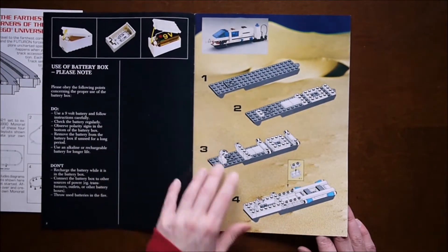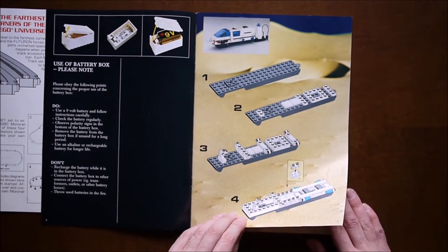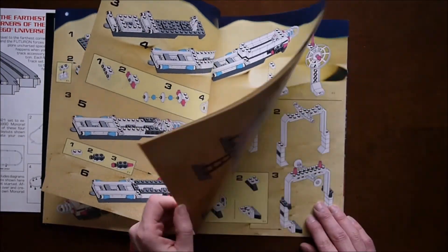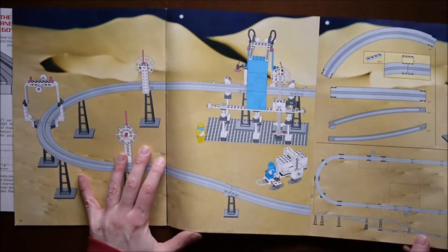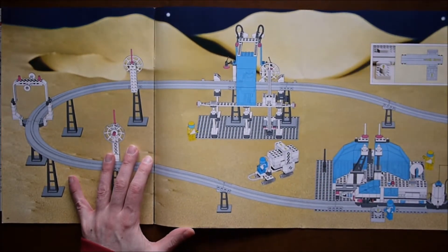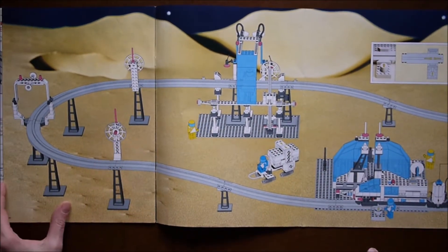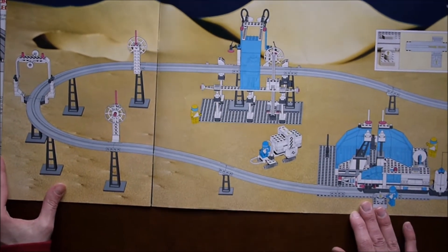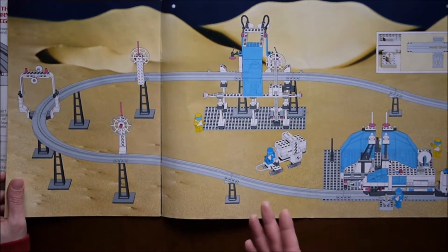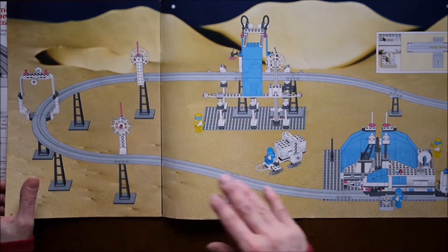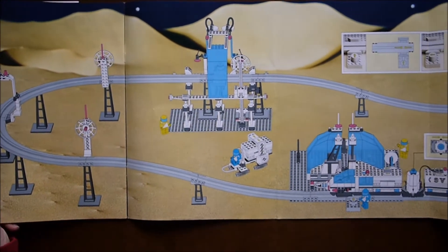And it talks about the nine-volt battery that powers the monorail. I'm just going to flip through here to the foldout page. It's too big to fit in frame. I'll just kind of pan along, but this is the full set. This is what it'll look like once I build it.